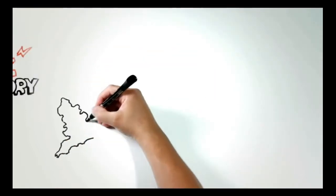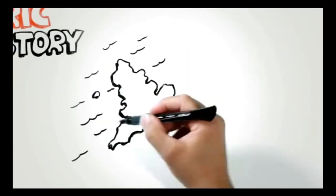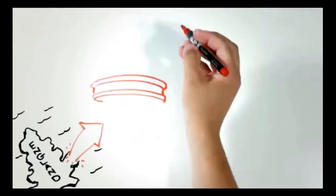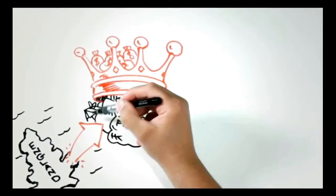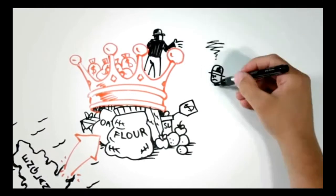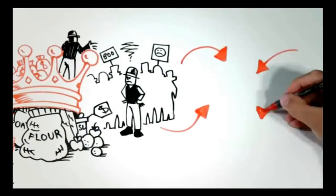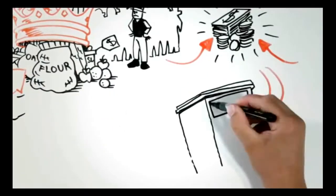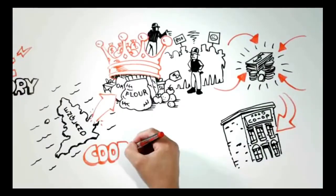Our story starts back in 1844 in not-so-merry England, where a group of weavers, fed up with the high price of company store groceries, pooled their money to buy their own food, creating a new form of business: the cooperative.